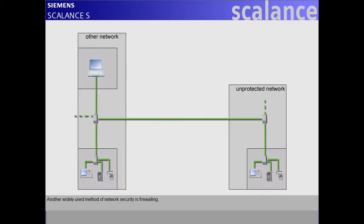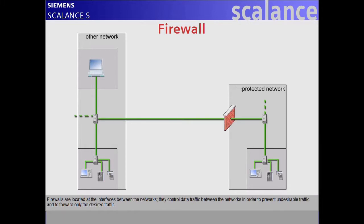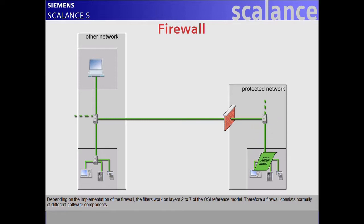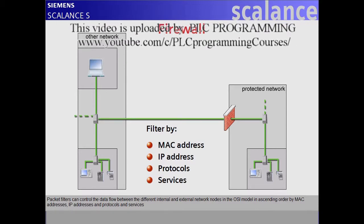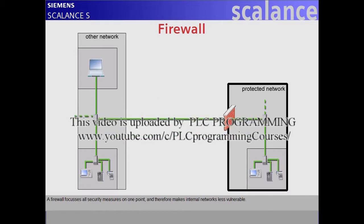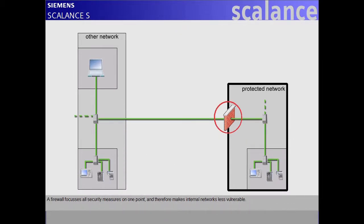Another widely used method of network security is firewalling. Firewalls are located at the interfaces between networks. They control data traffic between the networks in order to prevent undesirable traffic and to forward only the desired traffic. Depending on the implementation of the firewall, the filters work on layers 2 to 7 of the OSI reference model. Therefore, a firewall consists normally of different software components. Packet filters can control the data flow between internal and external network nodes in the OSI model in ascending order by MAC addresses, IP addresses, and protocols and services.